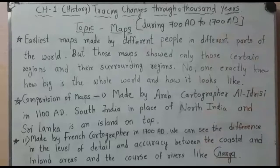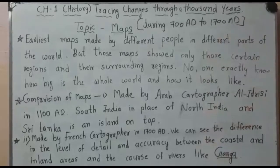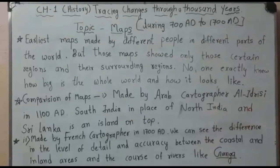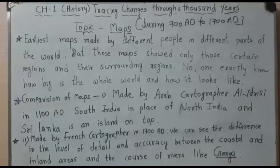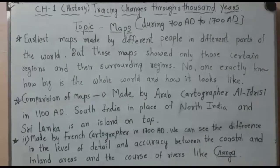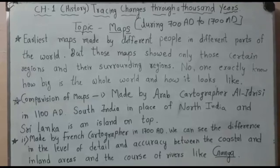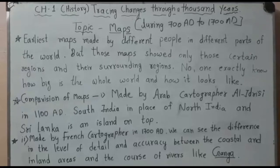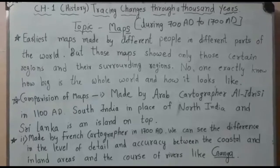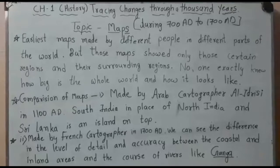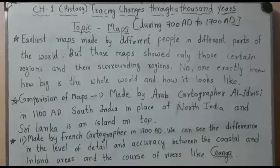We start with the topic of maps. We can understand and search different things using maps. In the earliest times, around 780 AD, different types of maps were designed by cartographers — earliest maps were made by different people in different parts of the world.